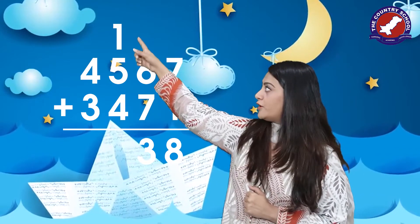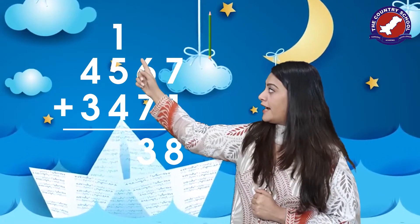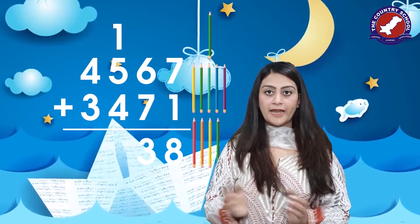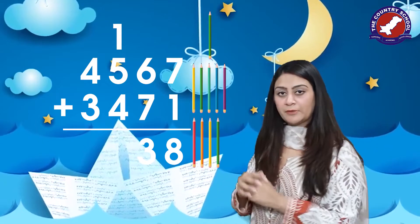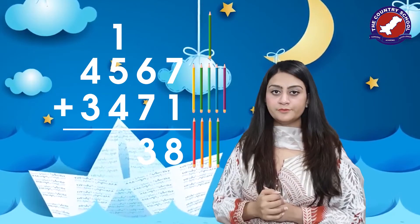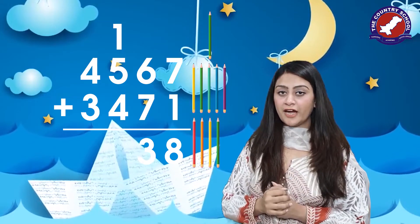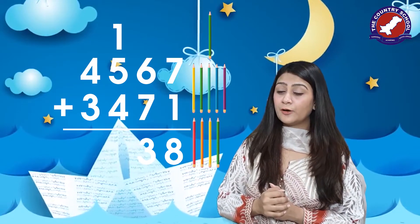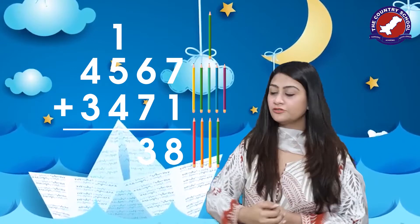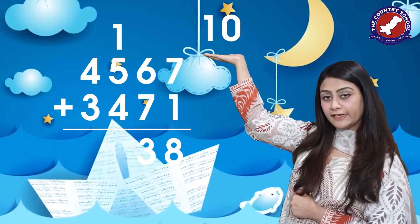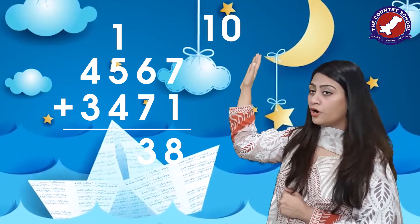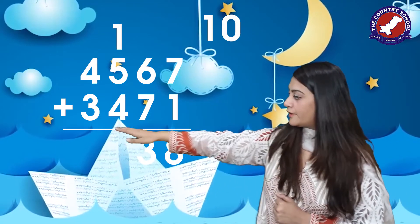Take out one pencil, then add five more pencils, then four more, and count them all together. You will find that you have ten pencils. Again, we cannot write a two-digit number here. The number on the right side comes here, and the number on the left side moves towards the thousands column.